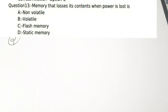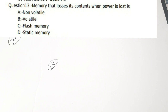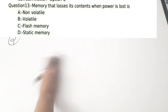If power is lost and the memory is lost, it is volatile memory. If it is not erased when power is off, it is non-volatile memory. The correct answer is option B — volatile.